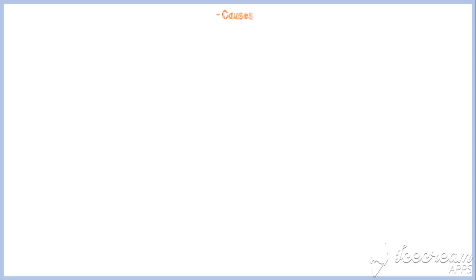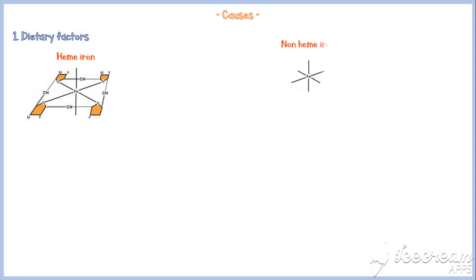Now we know the basic things about normal iron metabolism. Next, we see what are the causes of iron deficiency anemia. One of the major causes is dietary factors. There are two forms of dietary iron — heme iron and non-heme iron. Heme iron is well absorbed into the body because its absorption is not impaired by other dietary constituents.